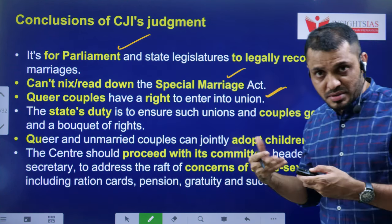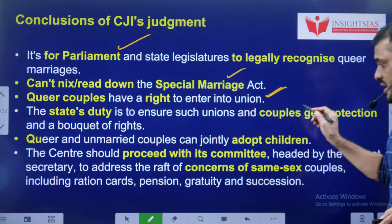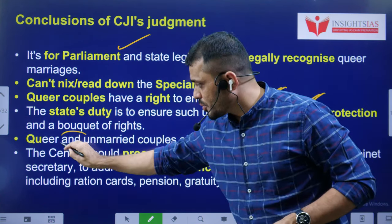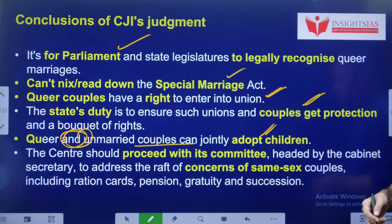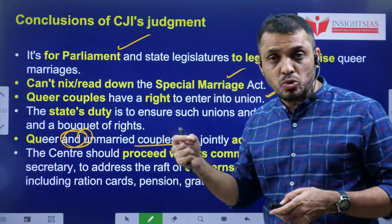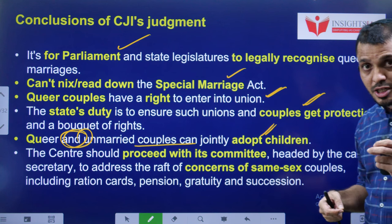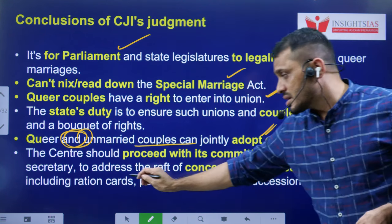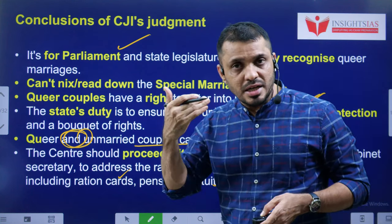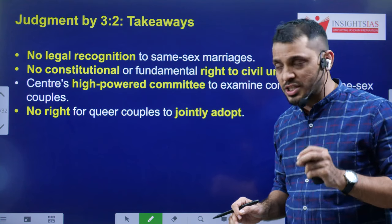Queer people have the right to enter into a union — that means they can stay together. State governments as well as the Union government have to protect homosexual couples the same way as heterosexual couples. Queer and unmarried couples can jointly adopt children. The central government has already appointed a committee to examine the rights related to homosexuals, and that committee can study issues related to same-sex marriage such as ration cards, pension, gratuity, succession rights, and so on.